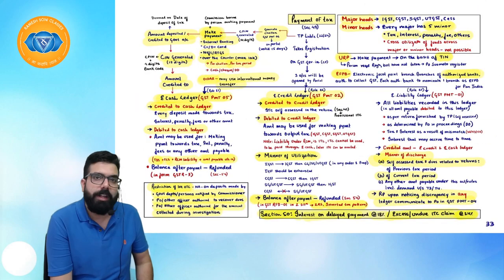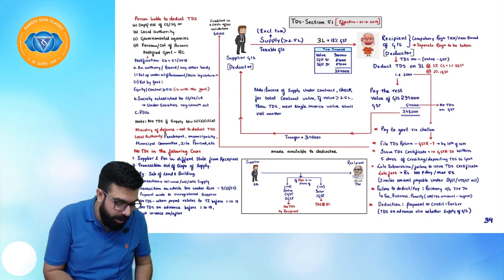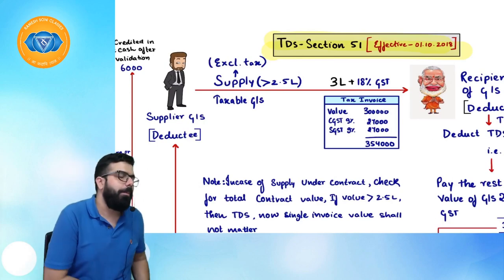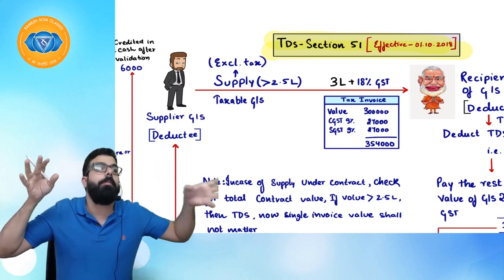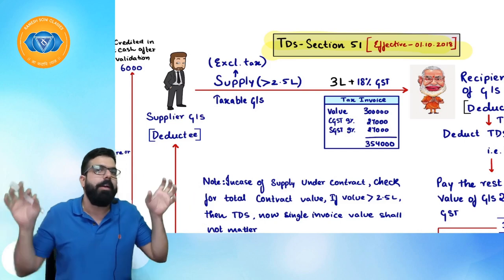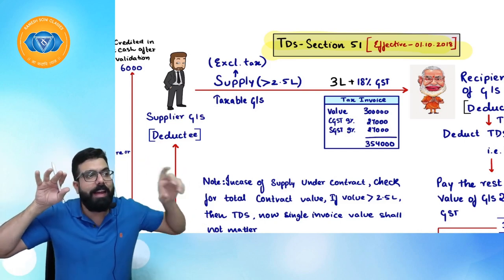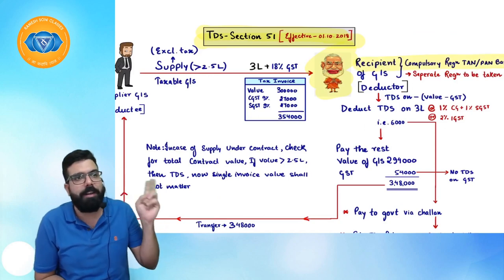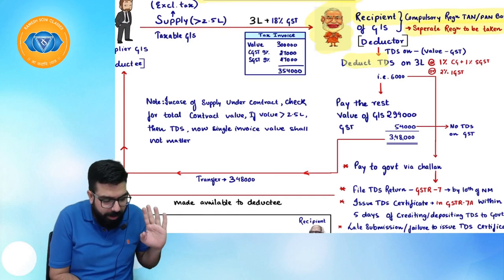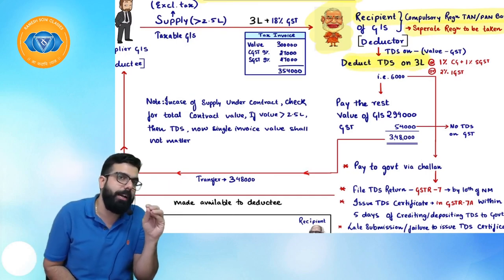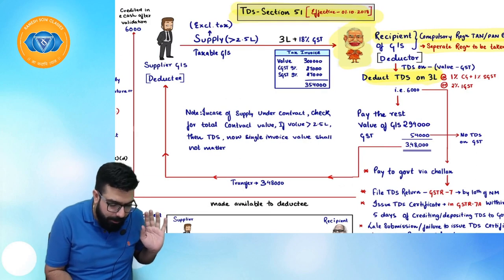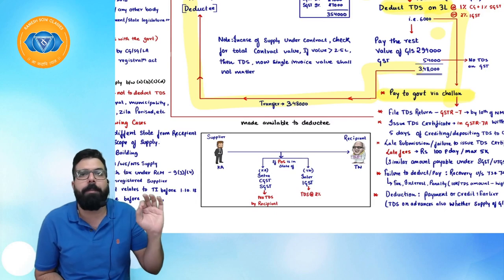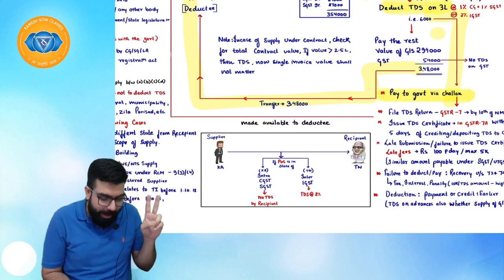TDS under Section 51 was effective from 1st October 2018. If a supplier supplies to a government department and the supply value is greater than ₹2.5 lakh (excluding tax), the government department must take compulsory registration (TAN-based or PAN-based), deduct TDS only on the value of supply (not on the tax amount), remit the remaining to the supplier, and pay the deducted tax to the government via challan.